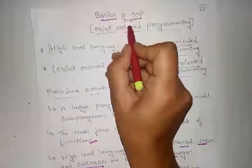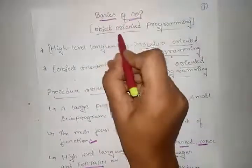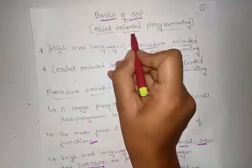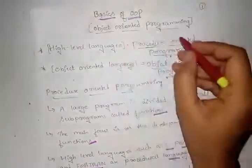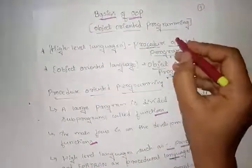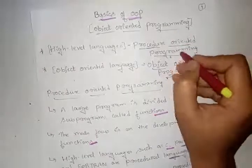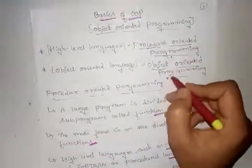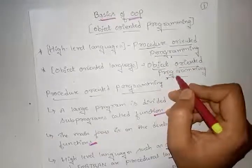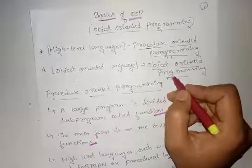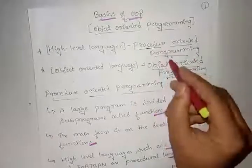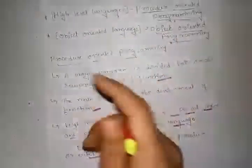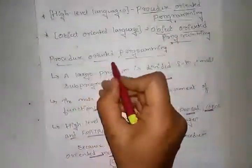Today we start with the basics of OOP, that is object oriented programming. There are two types of programming approaches: procedure oriented programming and object oriented programming. Before going to OOP, we want to know about both approaches.